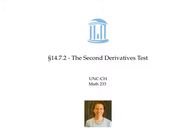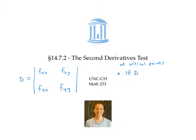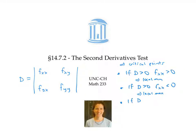The second derivatives test uses the discriminant to help determine the features of a graph at critical points according to the following rules: if the discriminant is positive and f_xx is positive, we have a local min; if the discriminant is positive and f_xx is negative, we have a local max; if the discriminant is less than zero, we have a saddle; and if the discriminant equals zero, the test is inconclusive.